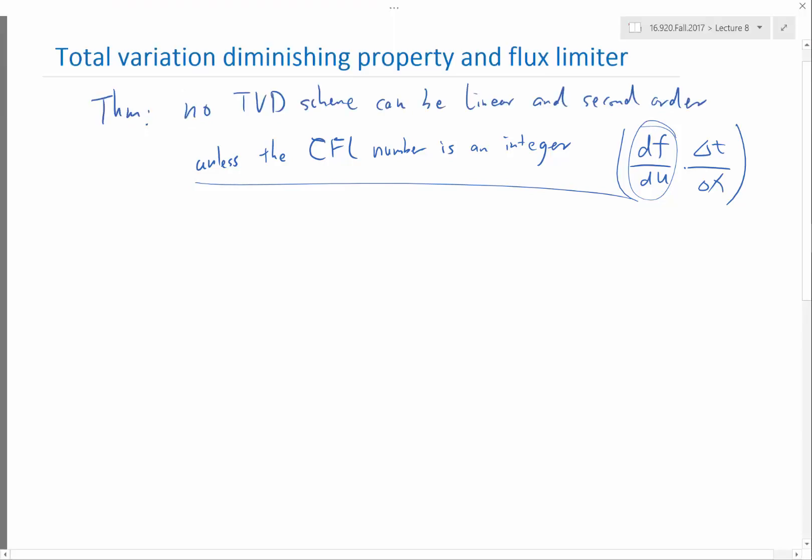Okay, so one way to achieve this is by the so-called flux limiter. The flux limiter is literally a limiter on how much a slope you want to construct in each cell. So basically, let's first explain this in the context of the previous case.